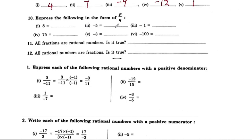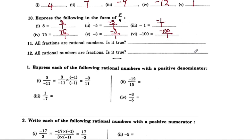Express the following in the form of p by q. For example, 8 can be written as 8 by 1 — this is the p by q formula.